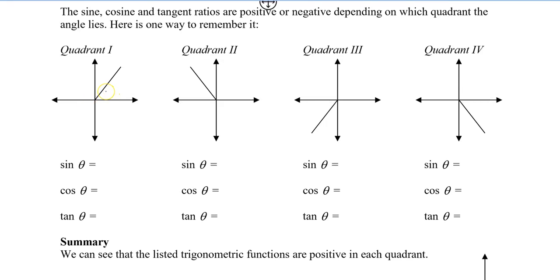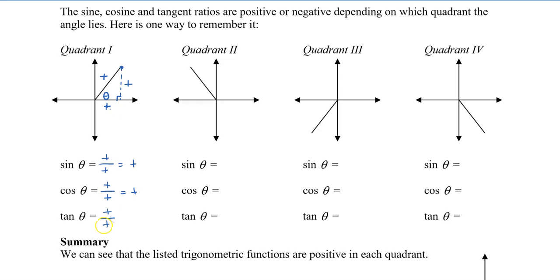Let's say the angle is in quadrant 1. I'll draw a triangle to the x-axis. All values going in the positive x-direction are positive, going vertically is also positive, and the radius is always positive. So sine theta — opposite divided by hypotenuse — is positive divided by positive, giving a positive value. Cos theta — adjacent divided by hypotenuse — both positive, giving positive. Tan theta — opposite divided by adjacent — both positive, giving positive. All three trig ratios are positive in quadrant 1.